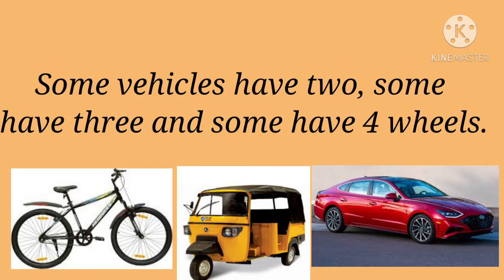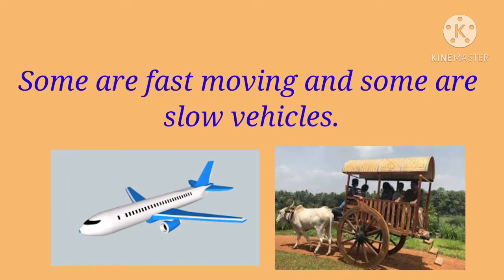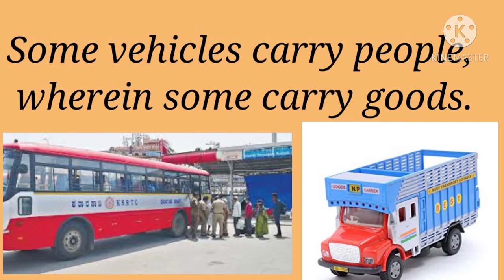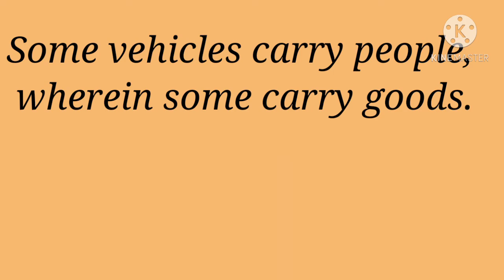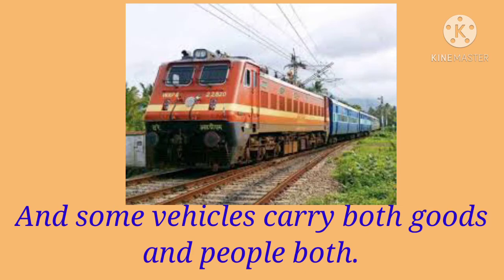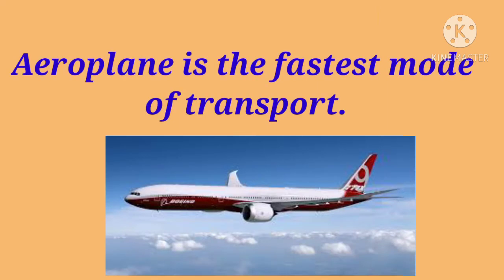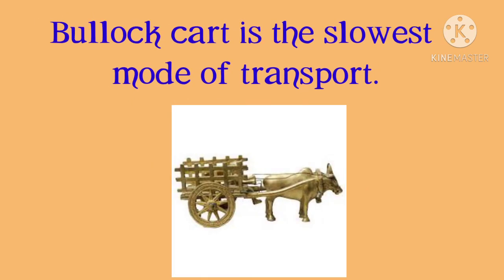Some vehicles have two, some have three, and some have four wheels. Some are fast moving and some are slow moving vehicles. Some vehicles carry people, some carry goods, and some vehicles carry both goods and people. Aeroplane is the fastest mode of transport, whereas bullock cart is the slowest mode of transport.